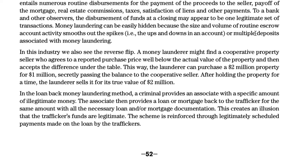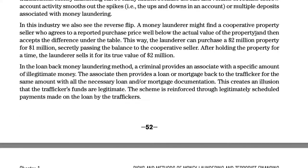A money launderer might find a cooperative property seller who agrees to report a purchase price well below the actual value of the property, and then accepts the difference under the table. This way, the launderer can purchase a $2 million property for $1 million. After secretly passing the balance to the cooperative seller and holding the property for a time, the launderer sells it back for its true value of $2 million.